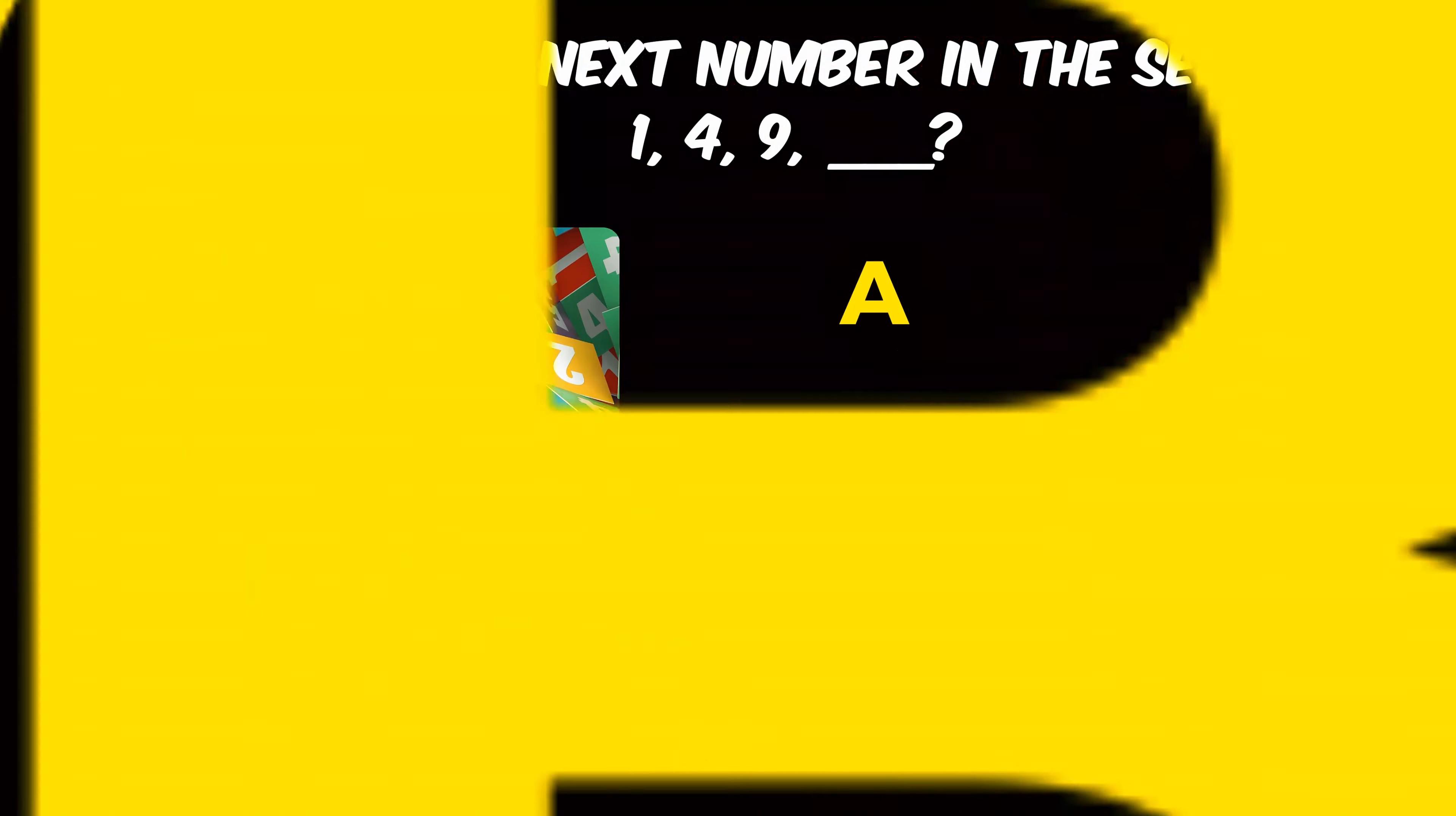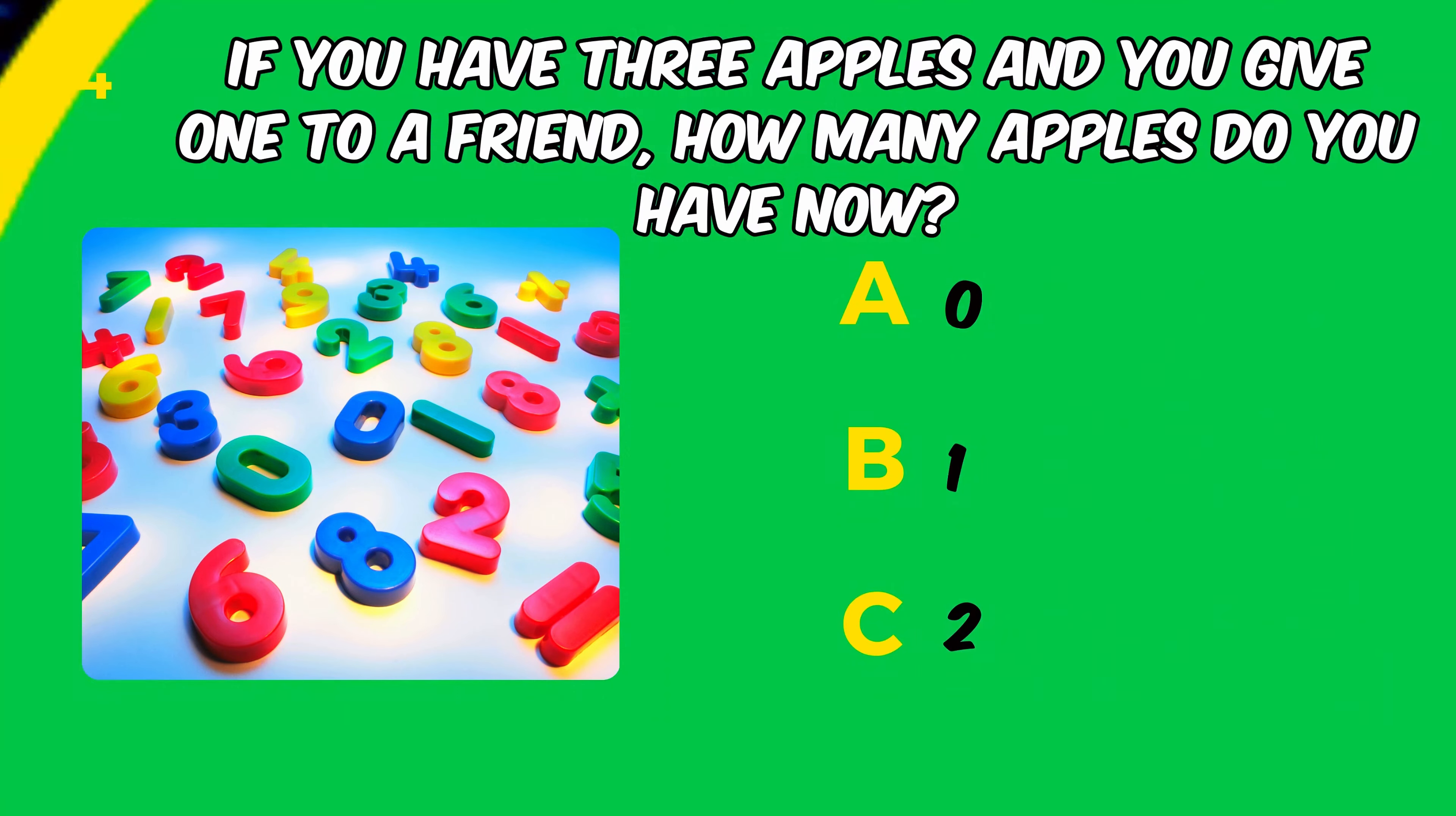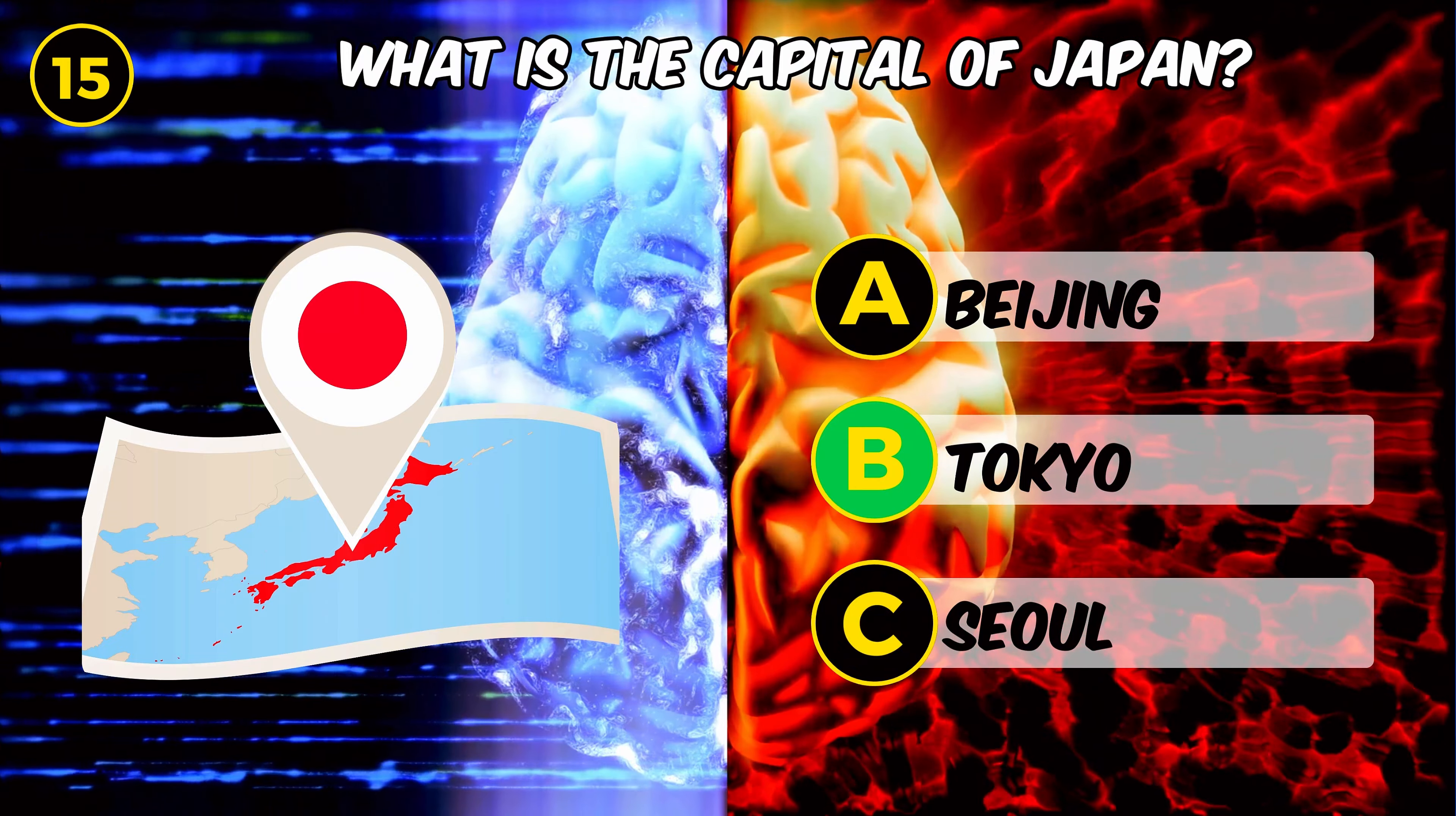What is the next number in the sequence? One, four, nine. Yes, sixteen. If you have three apples and you give one to a friend, how many apples do you have now? Two is correct. What is the capital of Japan? Tokyo.